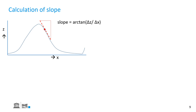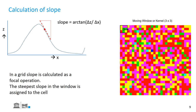Now this is for a graph, but how do we calculate the slope in a raster? Therefore we need to use a so-called moving window, because we need to calculate the slope to the surrounding pixels. We consider the pixel in the middle of a 3x3 moving window, and we assign the steepest slope to that pixel. Then we move the window to the next pixel, calculate the slopes in all directions, and assign the steepest slope every time to the center pixel. This is a focal operation.